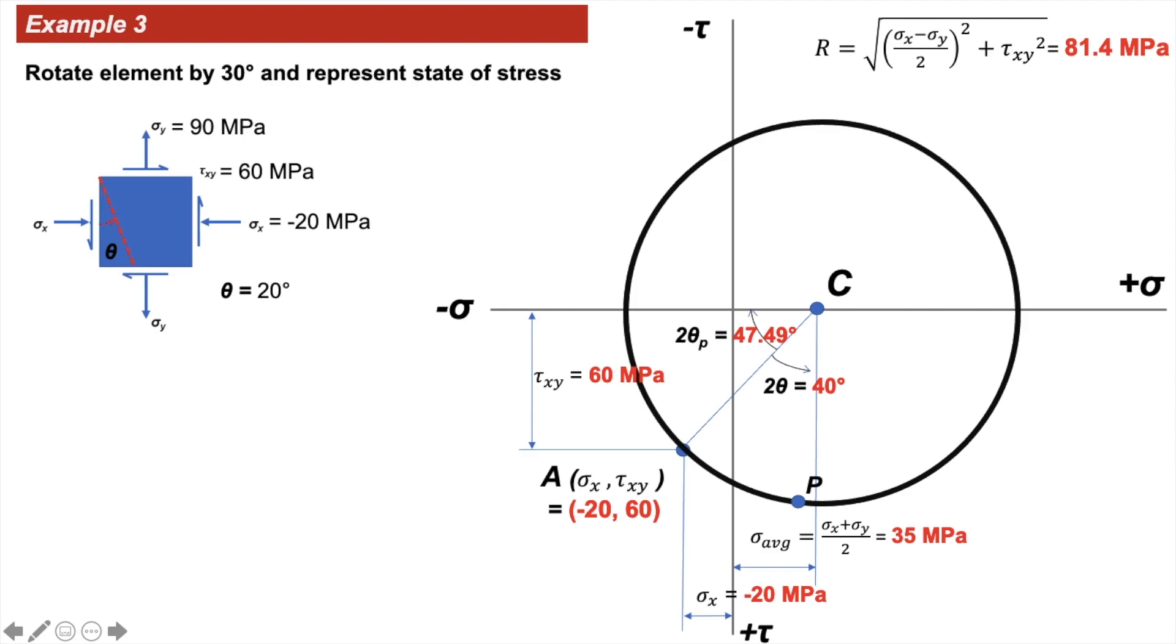That is how we locate the point P on the Mohr circle. Connect P to C, drop verticals from those points to the σ axis or the normal stress axis, and voila, we got σx' and σy'.